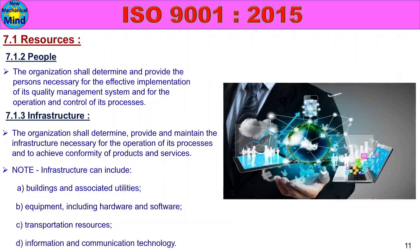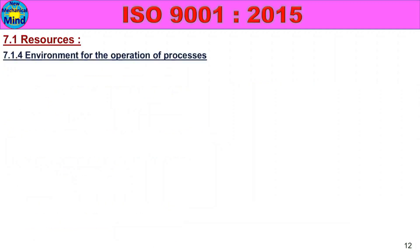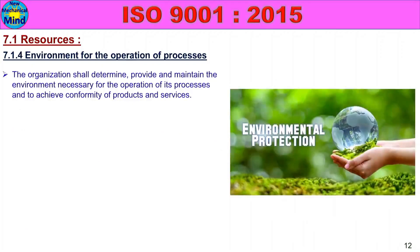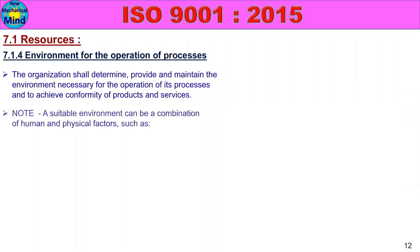7.1.4 Environment for the Operation of Processes: The organization shall determine, provide and maintain the environment necessary for the operation of its processes and to achieve conformity of products and services.